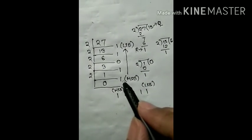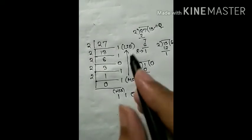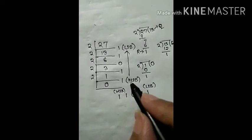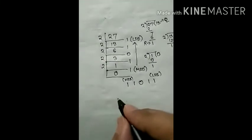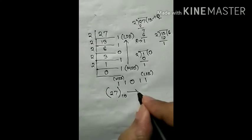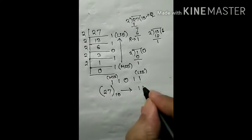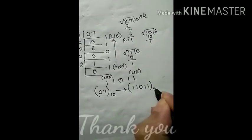So we write the number, that is binary number, from MSB to LSB. MSB is kept on the left and LSB at the right most corner. So the number 27 with base 10, that is decimal, is converted to binary 1 1 0 1 1 and the base is 2.